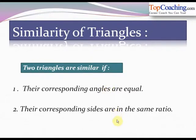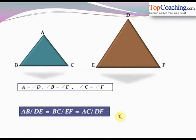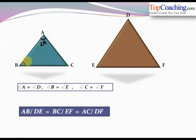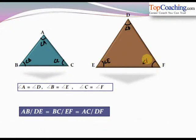Let's try to understand these two conditions. If we consider two triangles — triangle ABC and triangle DEF — we have angle A, angle B, and angle C in triangle ABC. Similarly, angle D, angle E, and angle F in triangle DEF.